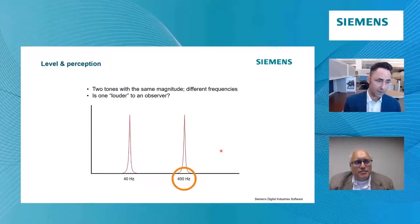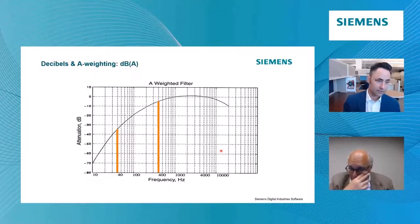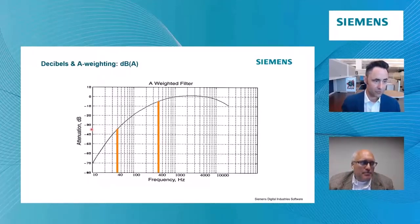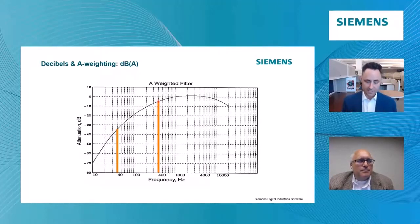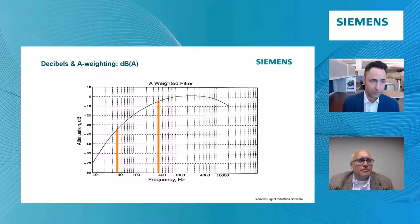Because if we look at the A-weighting curve down at 40 hertz, the A-weighting curve is saying you need to attenuate that level by 35 dB. It's 35 dB lower in amplitude to a human being than, say, 400 hertz. So even though they're the same sound pressure level, 400 hertz is going to appear to be louder to a human being. That's what A-weighting did for us.